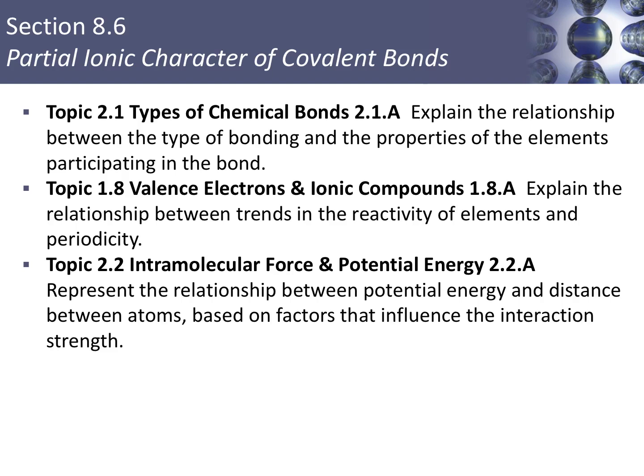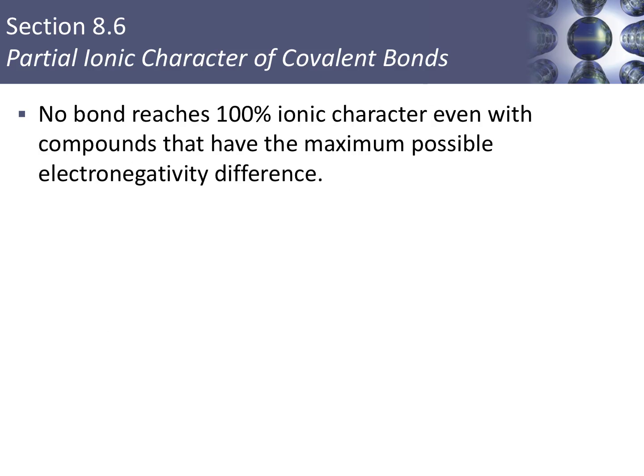In this video, we'll discuss the partial ionic character of covalent bonds and ionic bonding in general. We've been working on classifying chemical bonds as either ionic or covalent. Ionic bonds have a very large difference in electronegativity, and the electrons are transferred between the two atoms. However, no bond reaches 100% ionic character, even with very large differences in electronegativity.